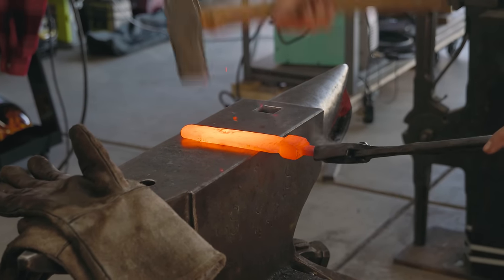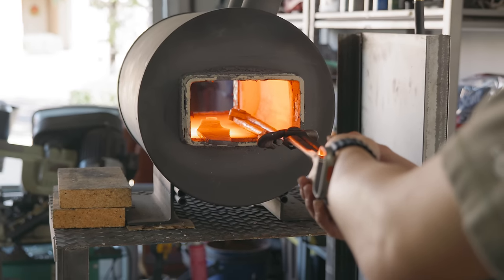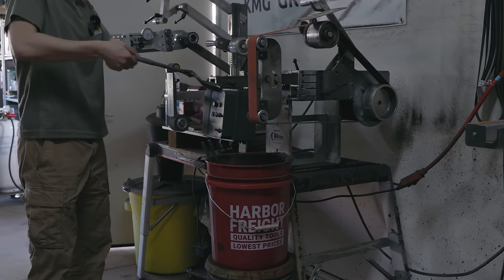You're probably looking at those tongs and wondering why they're smoking so much, and it's actually because I use these to quench my blades a lot and a lot of times I don't get the oil out of the tongs before I forge with them again. To deal with this, I just threw the tongs in the forge, burn off all the oil, and then quench it in water.